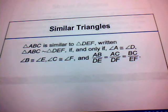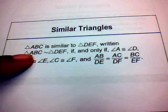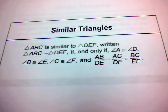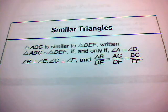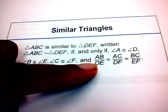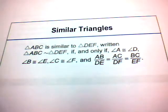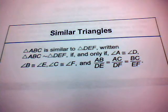Triangle ABC is similar to triangle DEF — written as triangle ABC with the squiggly similarity symbol, then triangle DEF — if and only if angle A is congruent to angle D, angle B is congruent to angle E, angle C is congruent to angle F, and AB over DE equals AC over DF equals BC over EF. In other words, the ratios of the corresponding sides must be equal, and the corresponding angles must be congruent.